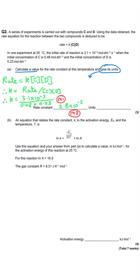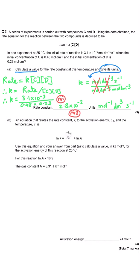The units of the rate constant are calculated by taking the units of rate — moles per decimetre cubed per second — and dividing by the concentration units: moles per decimetre cubed times moles per decimetre cubed. One moles cancels top and bottom, one dm to the minus 3 cancels top and bottom, leaving seconds to the minus 1 over moles per decimetre cubed. Bringing units from the bottom up gives mol⁻¹ dm³ s⁻¹.